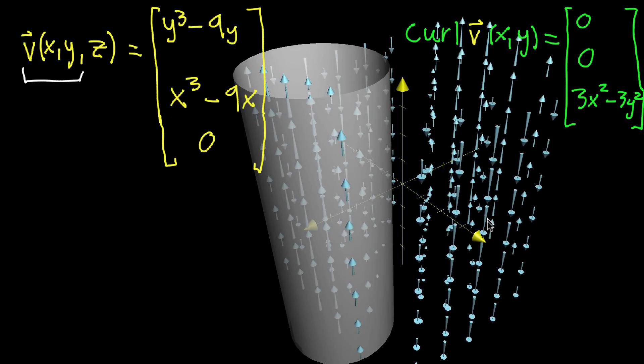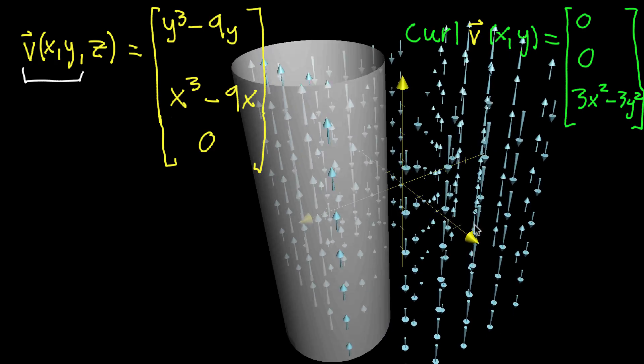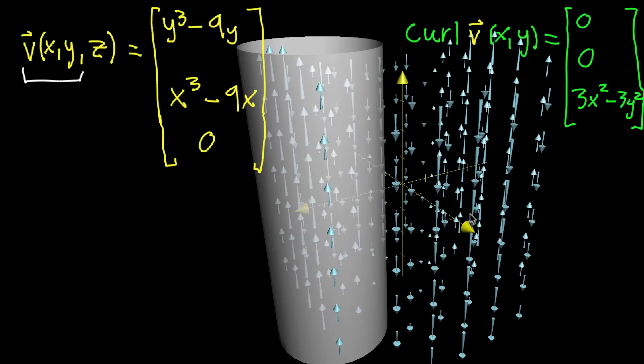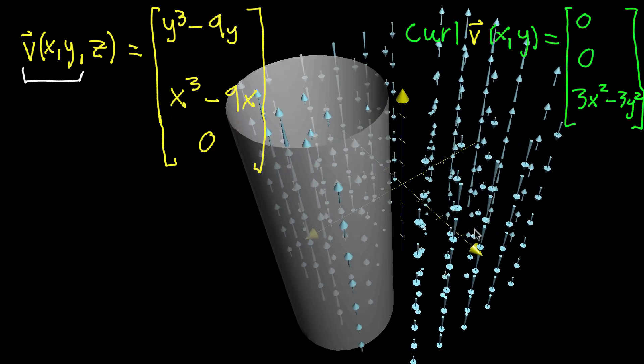And if you stick your thumb in the direction of all of these vectors in the negative z direction, that tells you the direction of, that tells you how the fluid, maybe you're thinking of it as air kind of rushing about the room, how that fluid rotates in three dimensions.